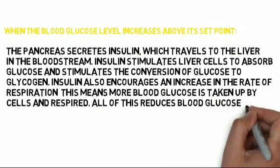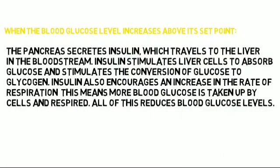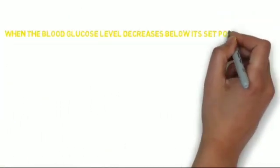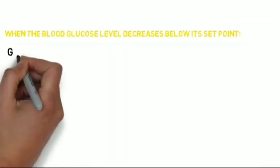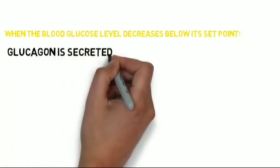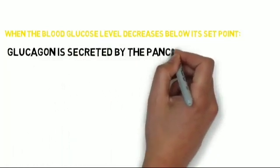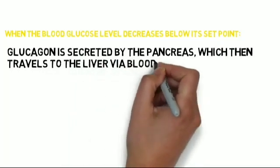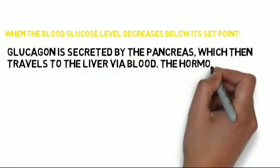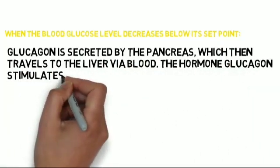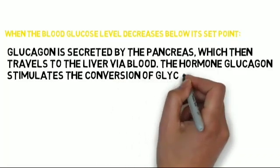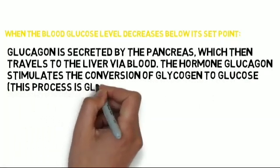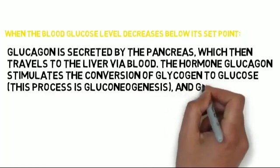When the blood glucose level decreases below its set point, glucagon is secreted by the pancreas, which then travels to the liver via blood. The hormone glucagon stimulates the conversion of glycogen to glucose — this process is gluconeogenesis — and glucose is then released back into the bloodstream, increasing blood glucose levels.